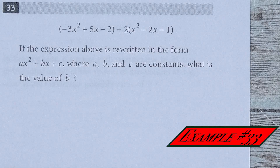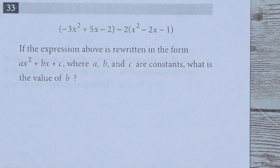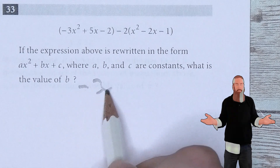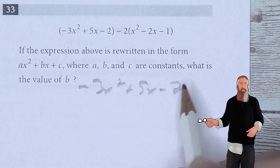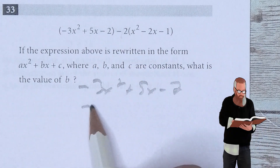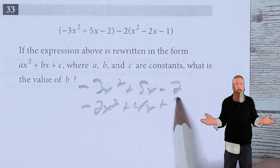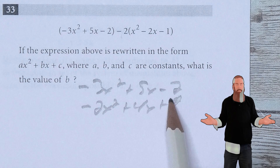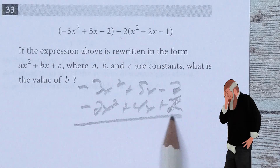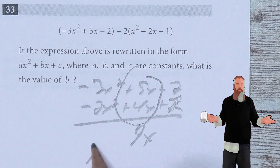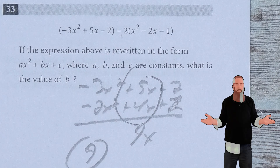If the expression above is rewritten in the form ax squared plus bx plus c, where a, b, and c are constants, what is the value of b? We expand to get negative 3x squared plus 5x minus 2, then distribute the negative 2 to get negative 2x squared plus 4x plus 2. Combining the x terms gives 9x, so b equals 9.